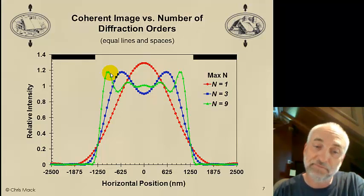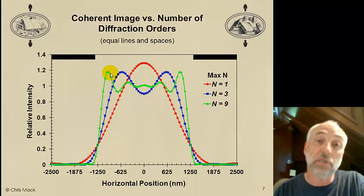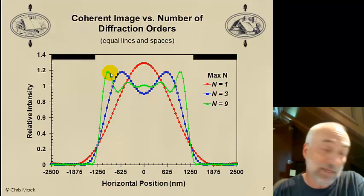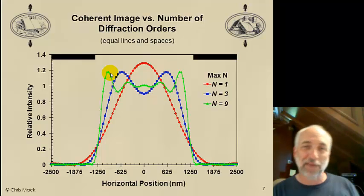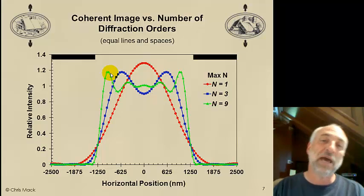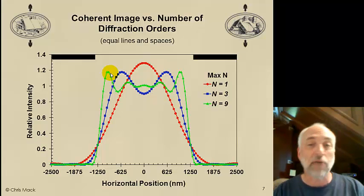Alas all lithography for state-of-the-art manufacturing results in images more like these red circles. We rarely capture more than 0 in the first diffracted orders. And life is kind of hard for lithographers because of that. But we'll get more into that when we understand how the photoresist interacts with this image.